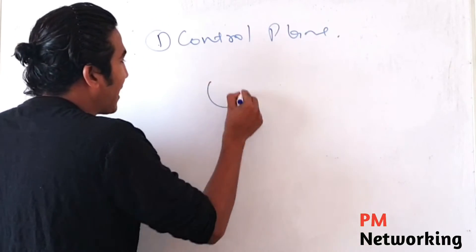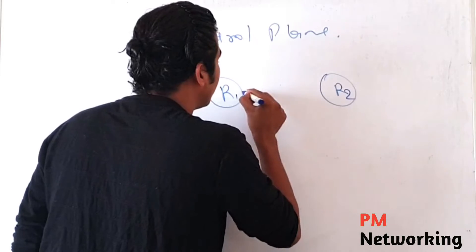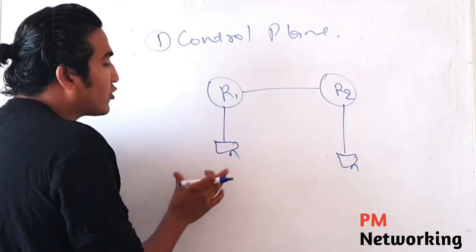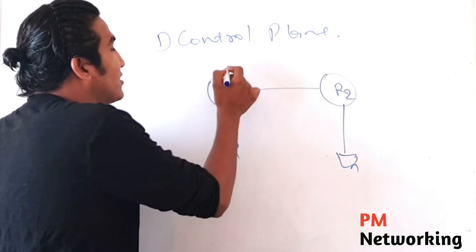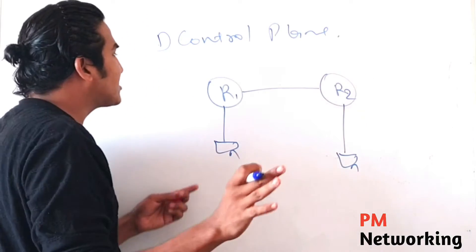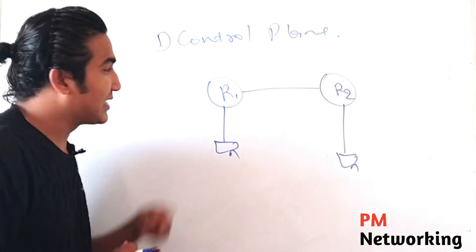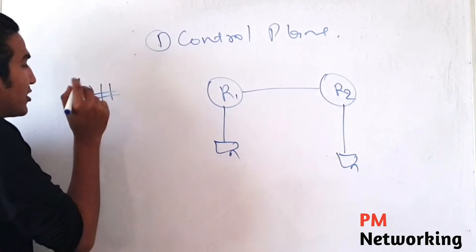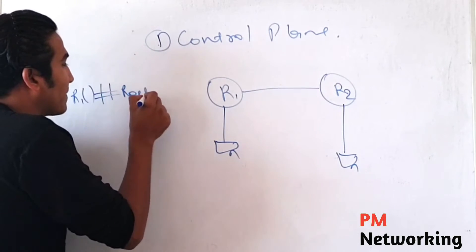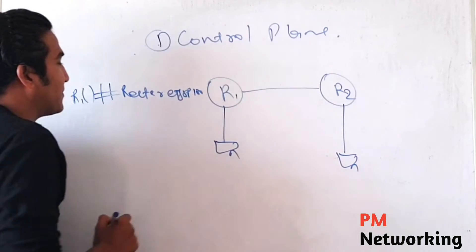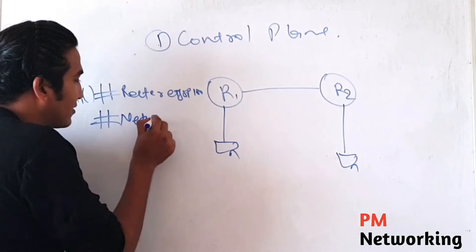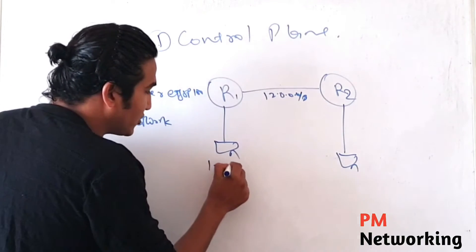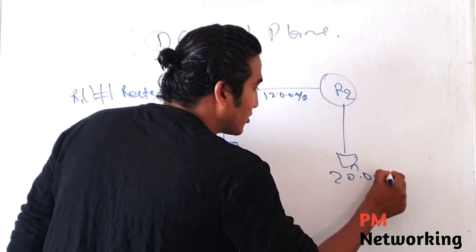Suppose we have two routers, R1 and R2, and two users — User 1 and User 2. To make communication possible between these two users, we have to run a routing protocol on R1 and R2. Suppose I am configuring EIGRP. To configure EIGRP on R1, go to configure terminal mode, then run 'router eigrp 100' with the AS number, then the network command — for example, network 12.0.0.0, 10.0.0.0, and 20.0.0.0.